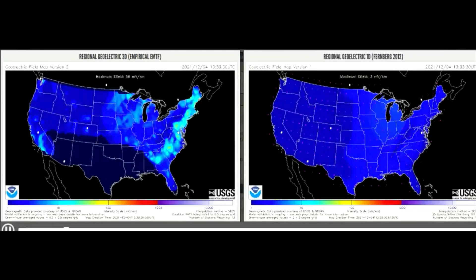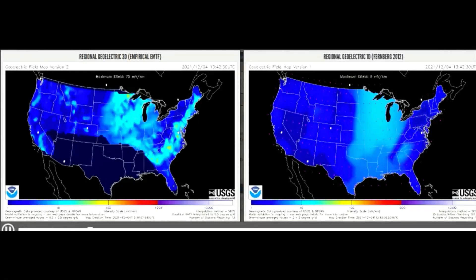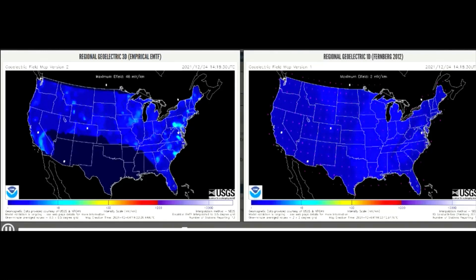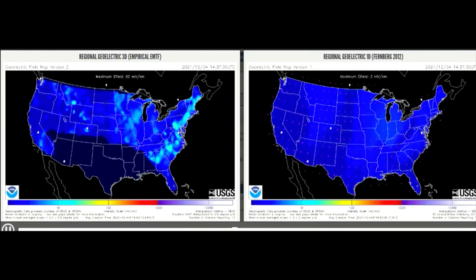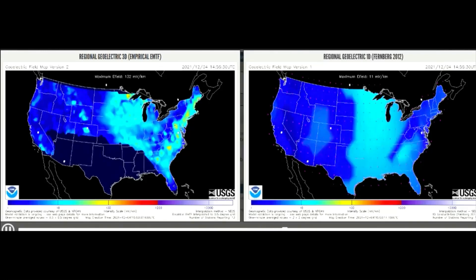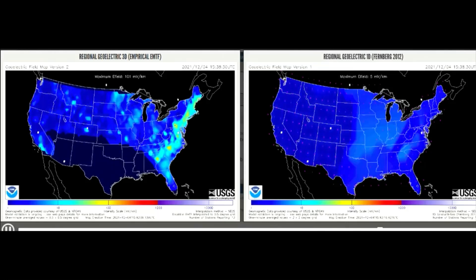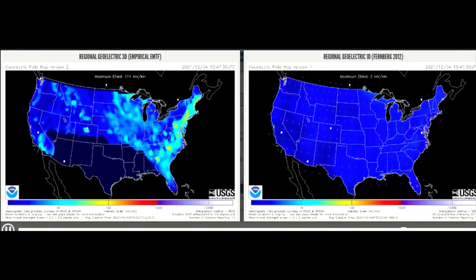This geo-electric field map shows a measure of the induction hazard to artificial conductors, such as electrical power lines, that results from geomagnetic activity. This is from today, and the activity is mostly in the mid-upper United States and along the eastern side.